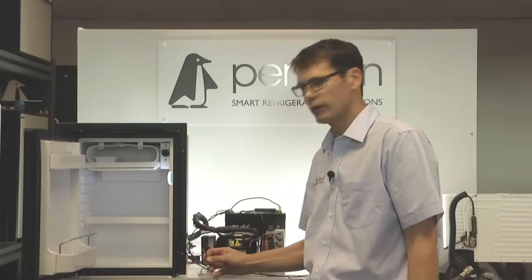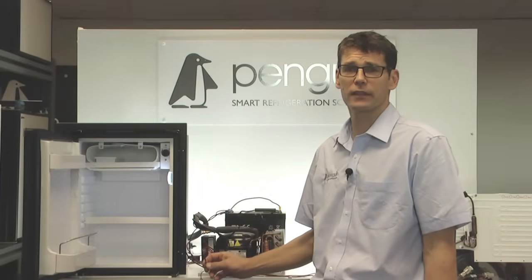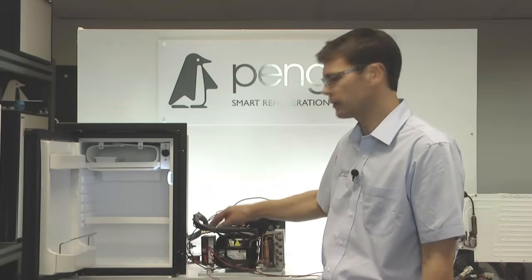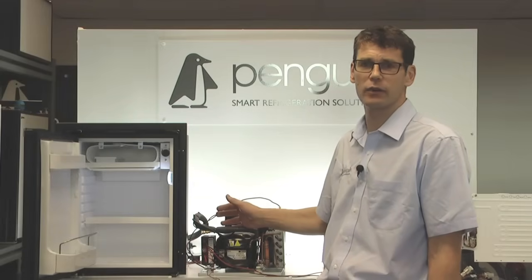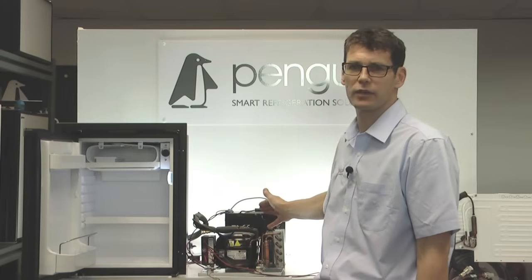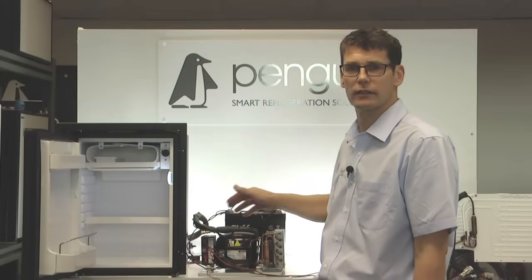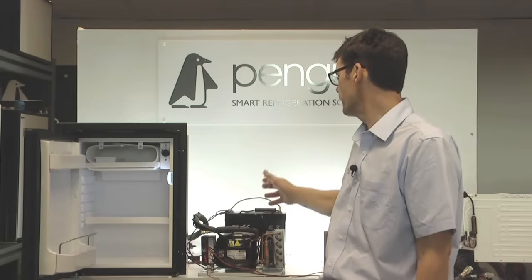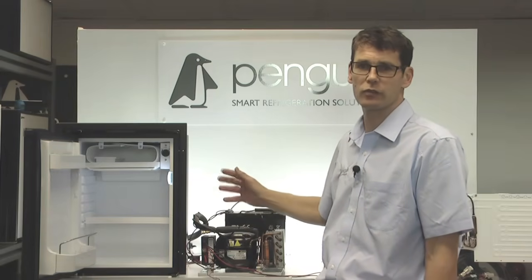So we found our fault code, which is fault code one, and this is low voltage. This means that the controller of the compressor is not getting enough voltage to start. Now quite often the voltage at the battery can be way better than what is being seen at the compressor.